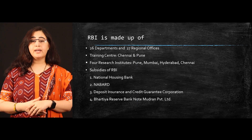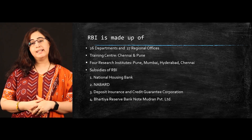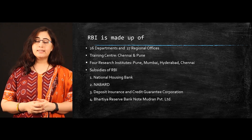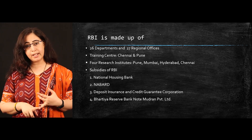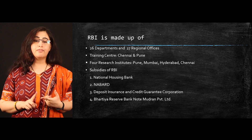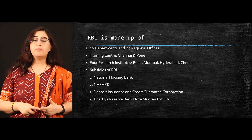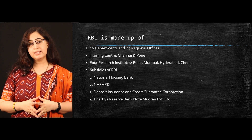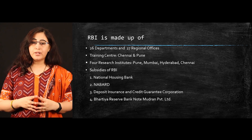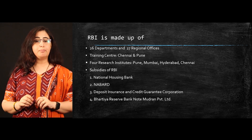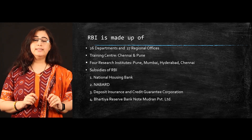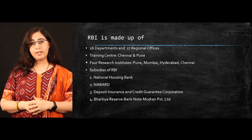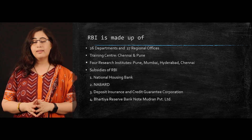RBI is made up of 26 departments and 27 regional offices, two training centers — one in Chennai and one in Pune — four research institutes in Pune, Mumbai, Hyderabad, and Chennai, and four different subsidiaries. The first is National Housing Bank. The second is NABARD, which is specifically made for agricultural banking and controls the RRBs. The third is the Deposit Insurance and Credit Guarantee Corporation, and the fourth is Bharatiya Reserve Bank Note Mudran Private Limited, which issues currency in the country. In our next video session, we will discuss about the functions of RBI in detail. Thank you.